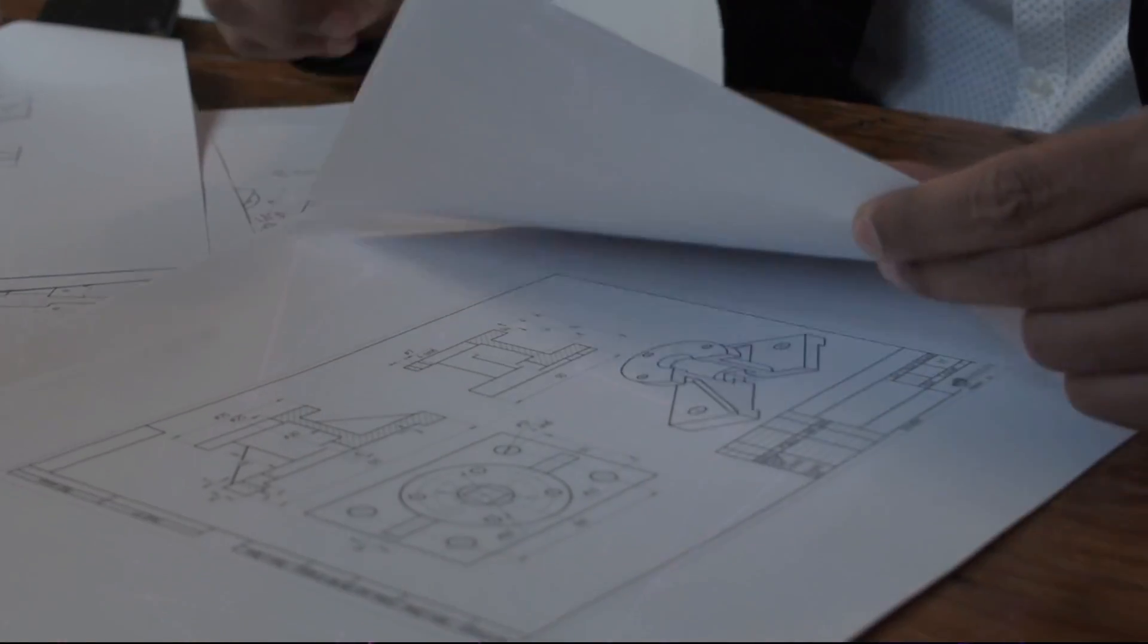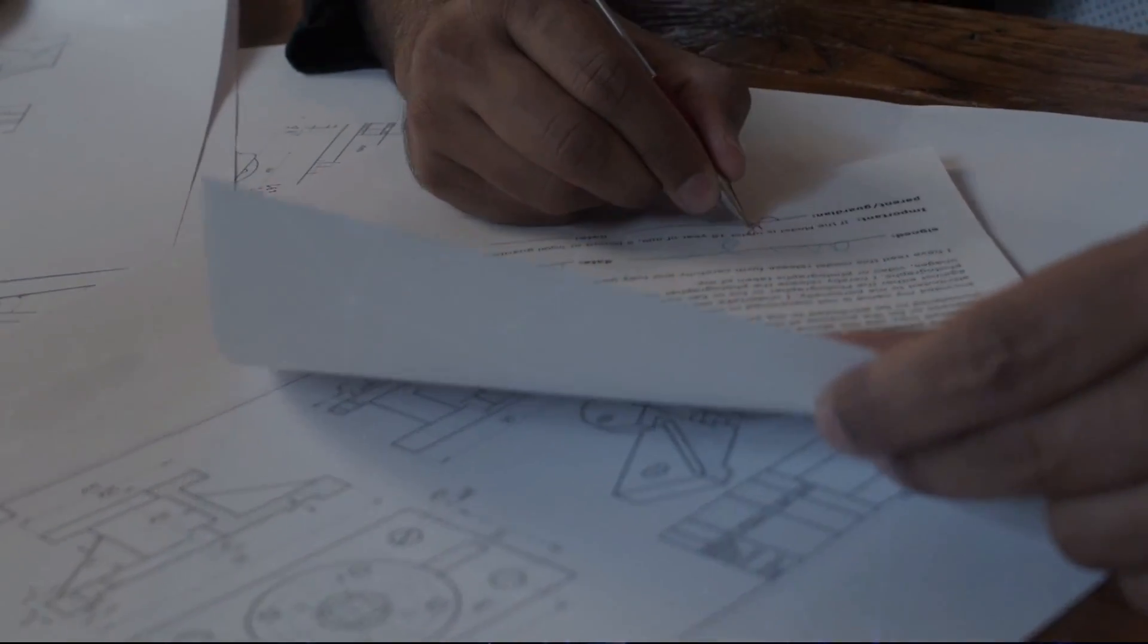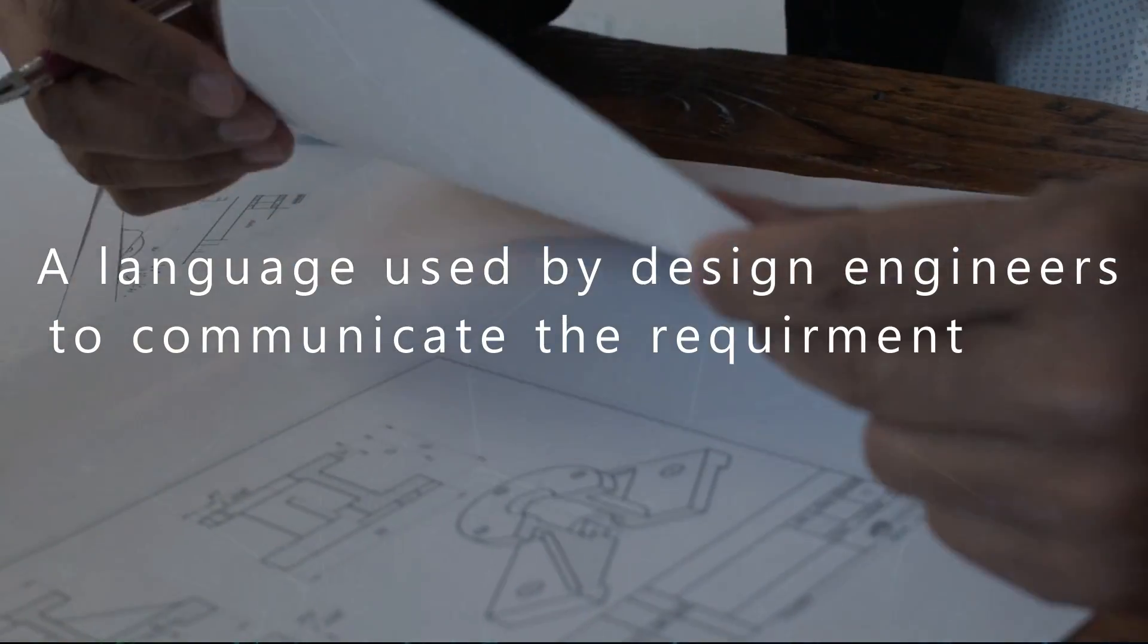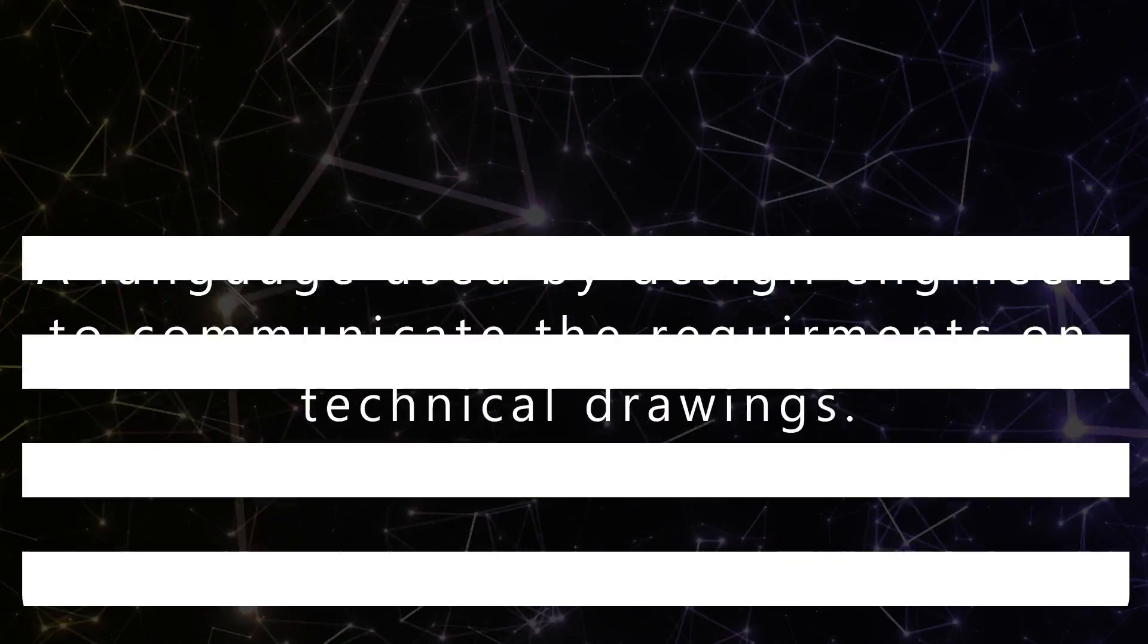Geometric Dimensioning and Tolerancing is a kind of language used by design engineers to communicate the requirements on technical drawings. Our most important component is the feature control frame. It consists of two or three fields and an arrow. The arrow is also called the leader.